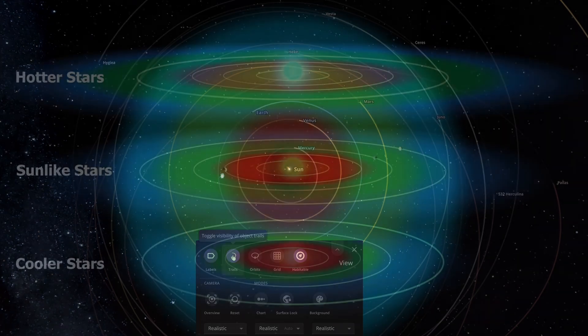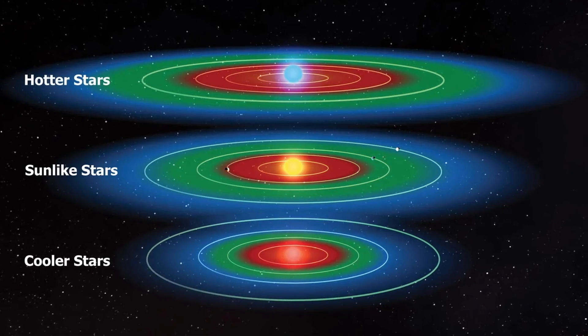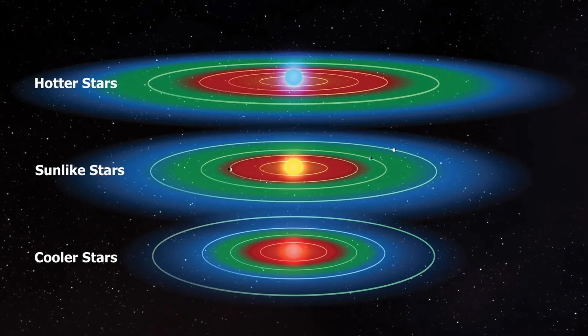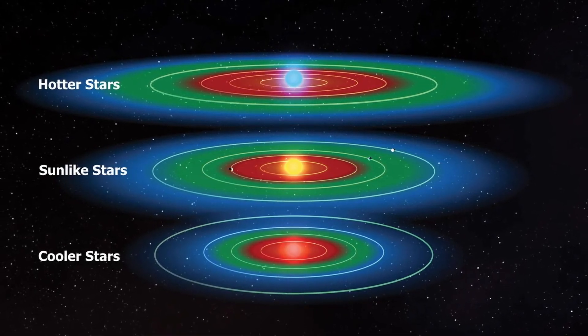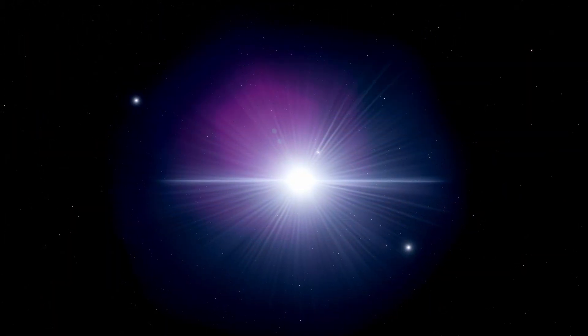But you might think, what if our sun was a bit smaller or a bit larger? Surely we could still thrive around such a star, even if the habitable zone was a bit shorter or a bit longer, right? Well, you would think so, but there's actually a few problems with this.